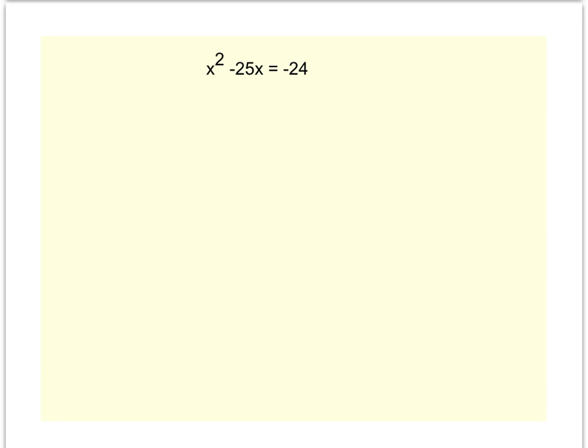The second problem for this video, again, we want to solve trinomials by factoring, but I notice this is not in the right form yet to solve. I need to get all my terms on the left-hand side of the equal sign, so I'm going to add 24 to both sides. So I get x squared minus 25x plus 24 equals 0.